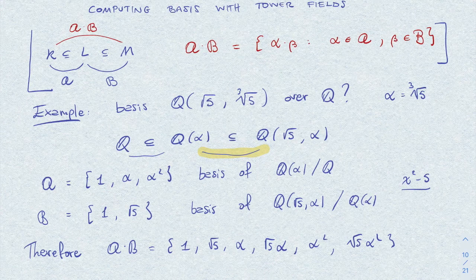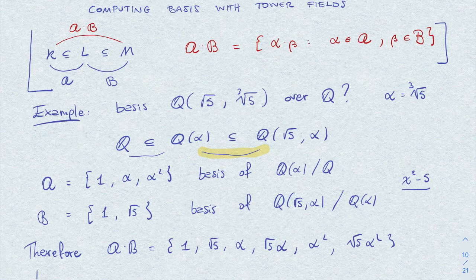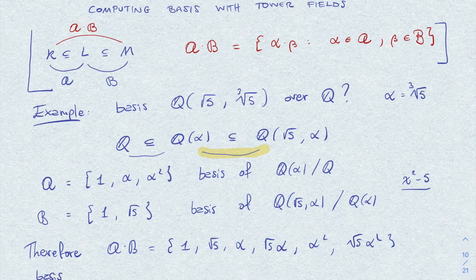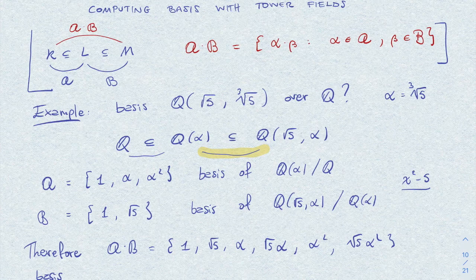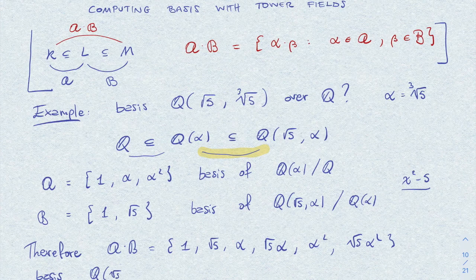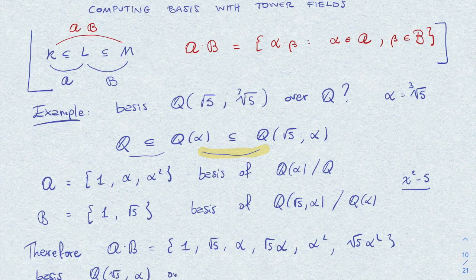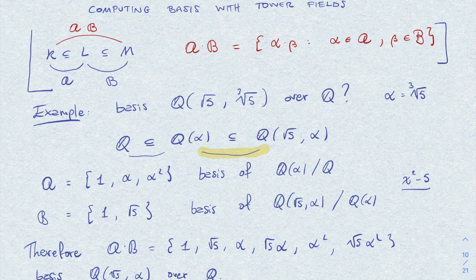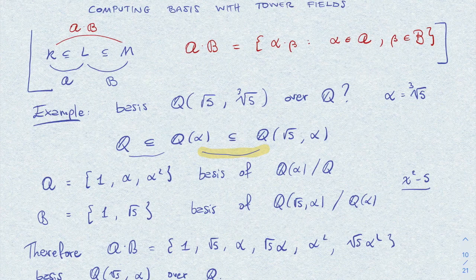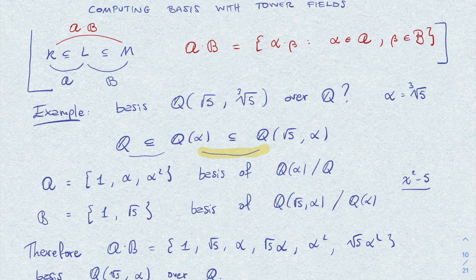This is a basis of our extension Q extended by square root of 5, alpha over Q. So in particular, an extension of degree six, and this was the example to clarify this statement.